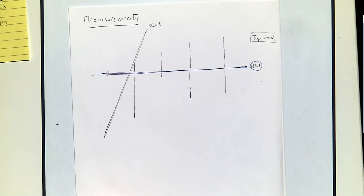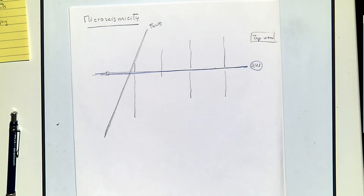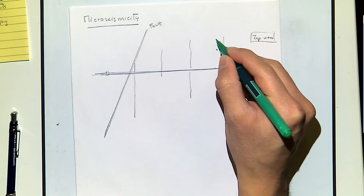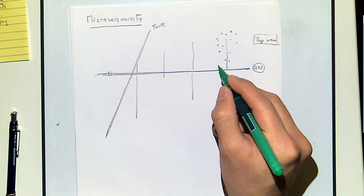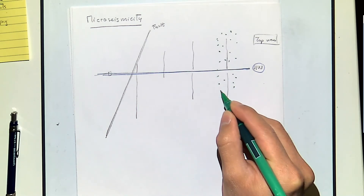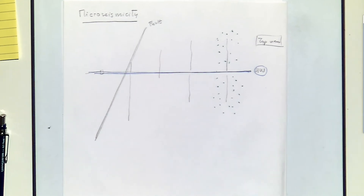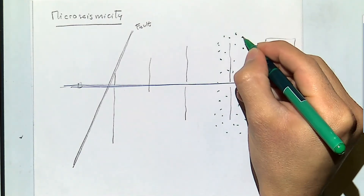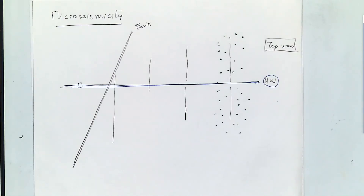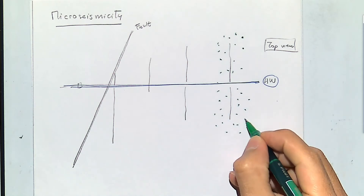There is evidence through micro seismicity that whenever we do hydraulic fracturing, there is acoustic emission that comes from places close to the fracture and some other places not that close. What I'm drawing here are the locations of these micro seismicity events — similar to finding the hypocenter of an earthquake. The hypocenter accounts for depth.